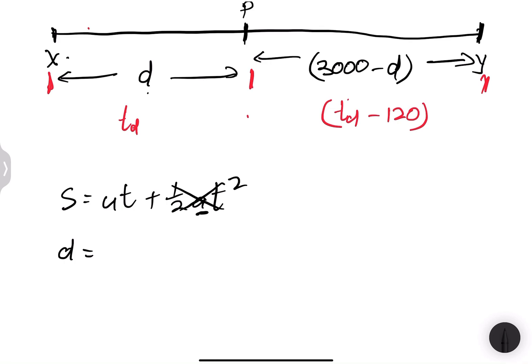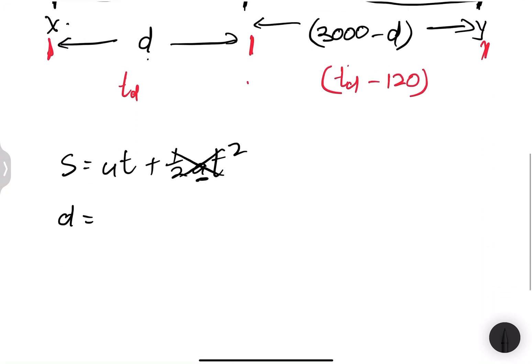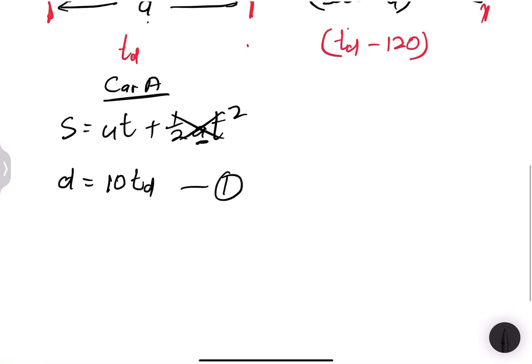Now I'll set up an equation for Car A. We know Car A is moving at a constant speed of 10 metres per second, so using s = ut with zero acceleration, we get: d = 10 × td. Let's call that equation one.